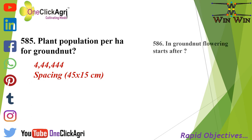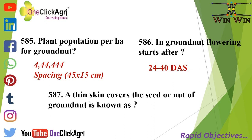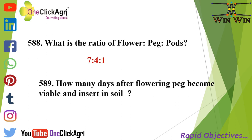In groundnut, flowering starts after 24 to 40 days after sowing. The thin skin cover over the seed or nut of groundnut is known as testa. What is the ratio of flower to peg to pods? 7 : 4 : 1.